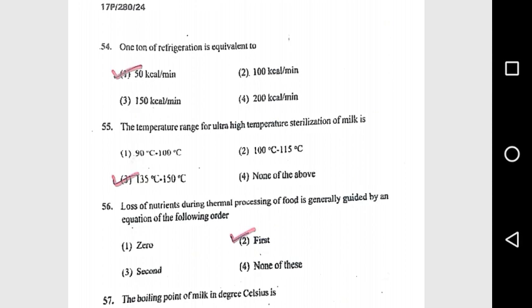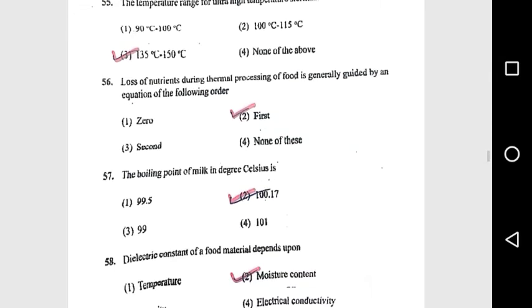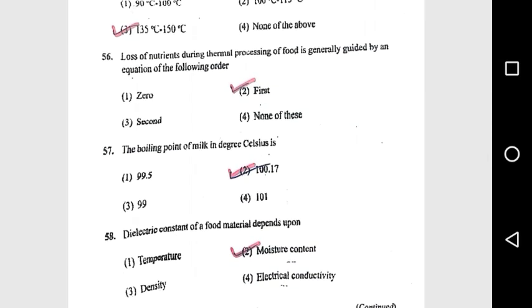Question 55: The temperature range for ultra-high temperature (UHT) sterilization of milk is 135°C to 150°C. Question 56: Loss of nutrients during thermal processing of food is generally guided by a first-order equation.